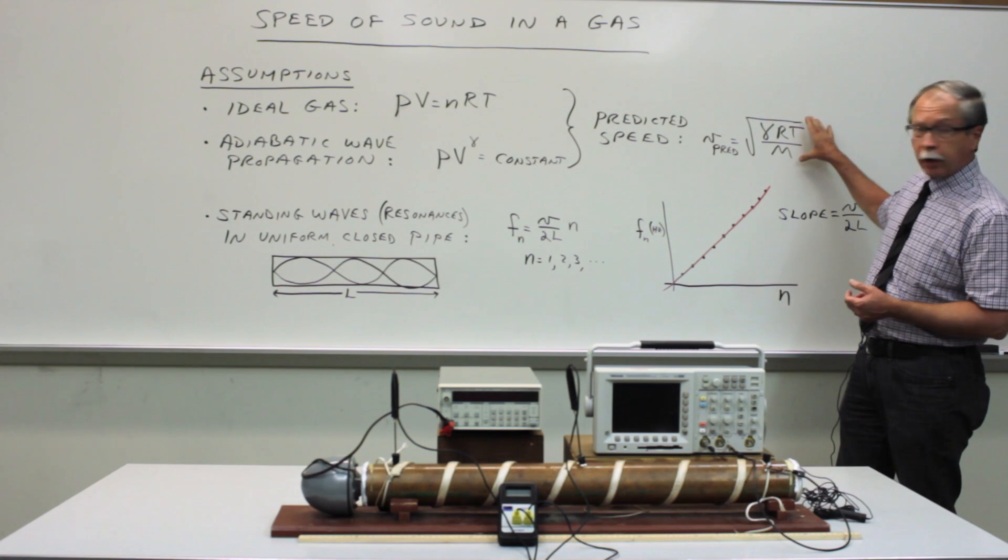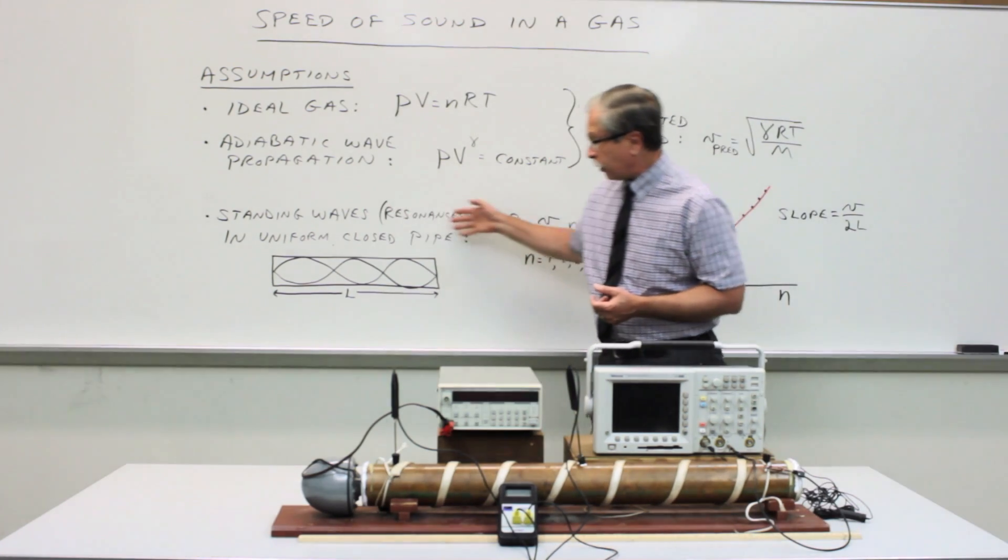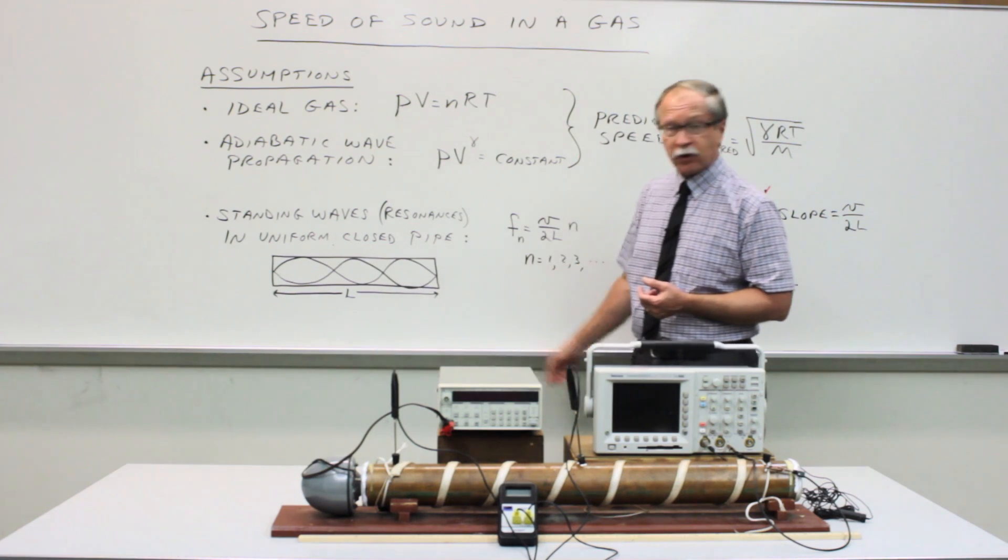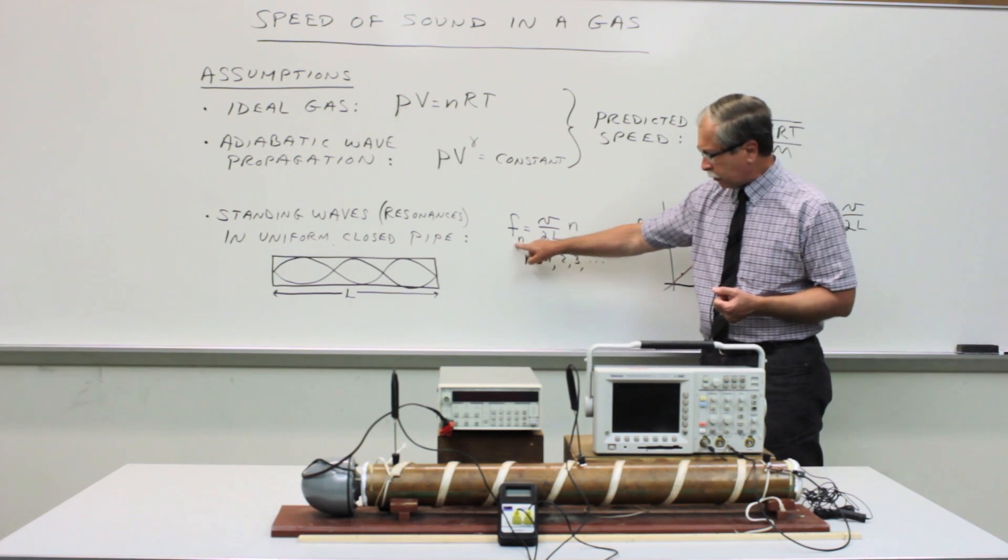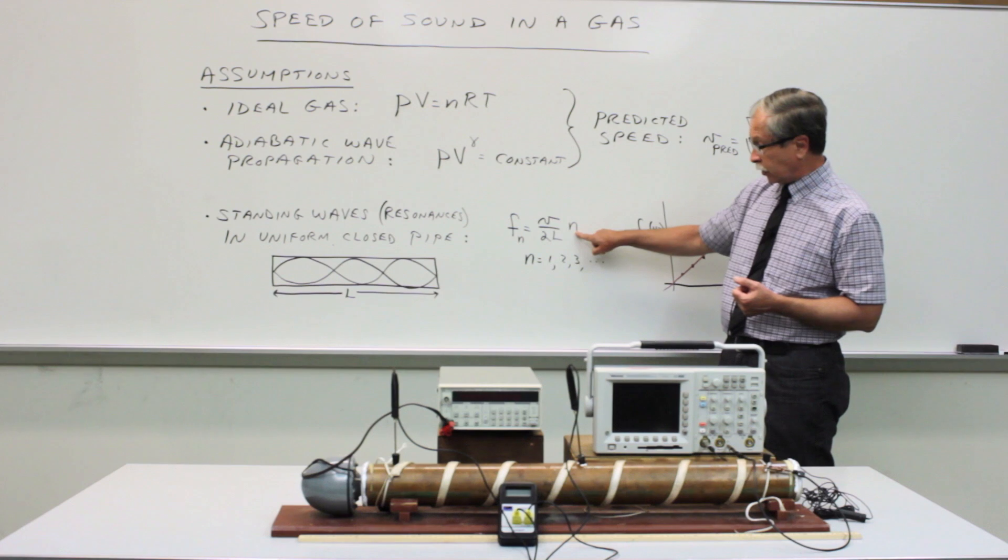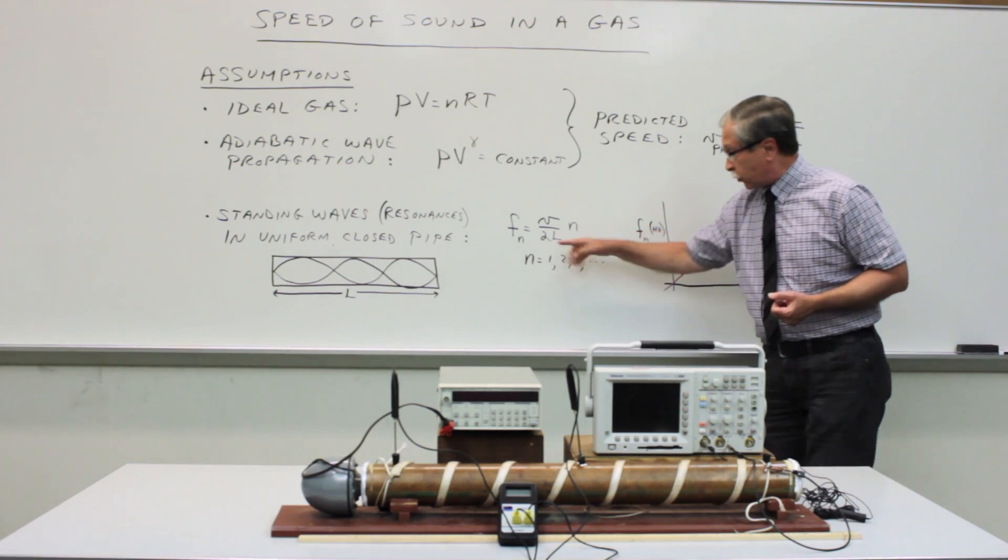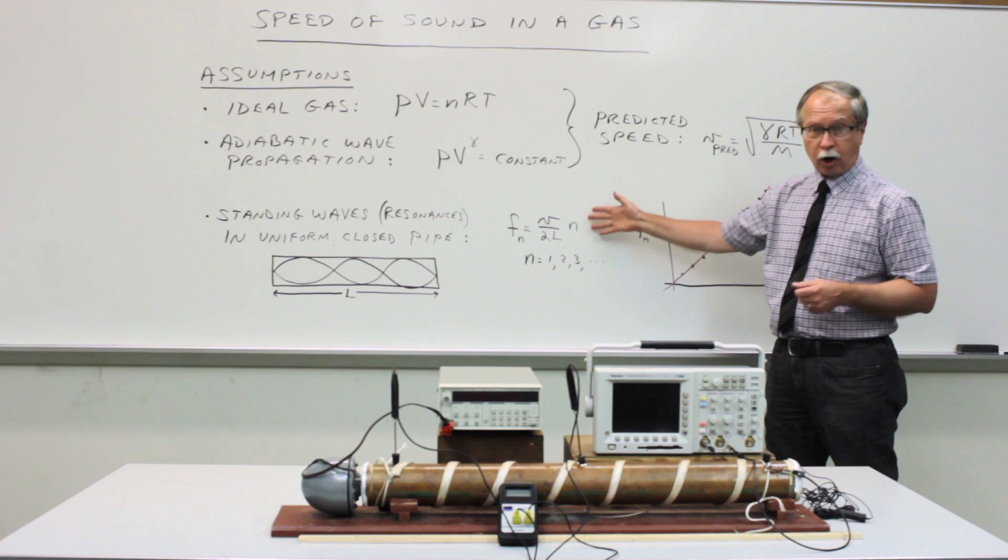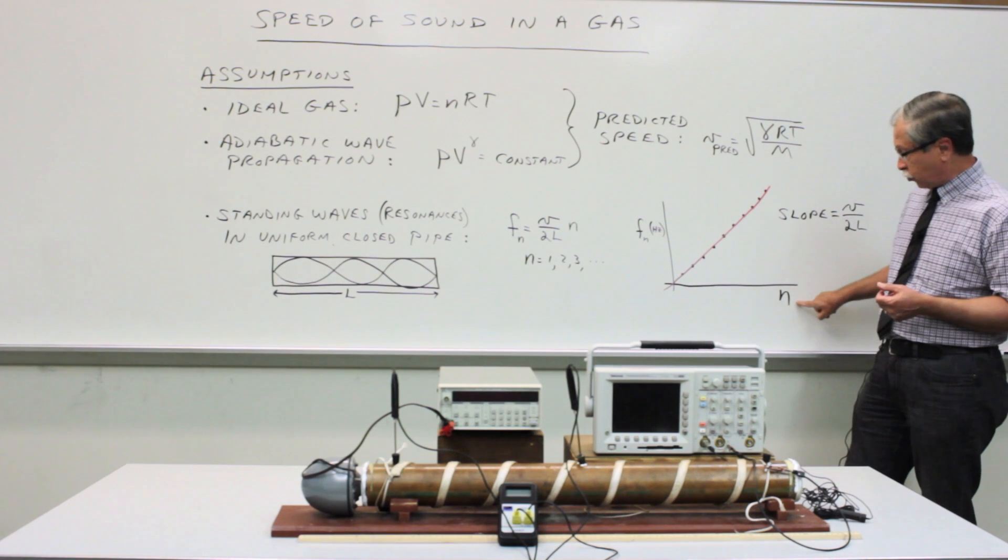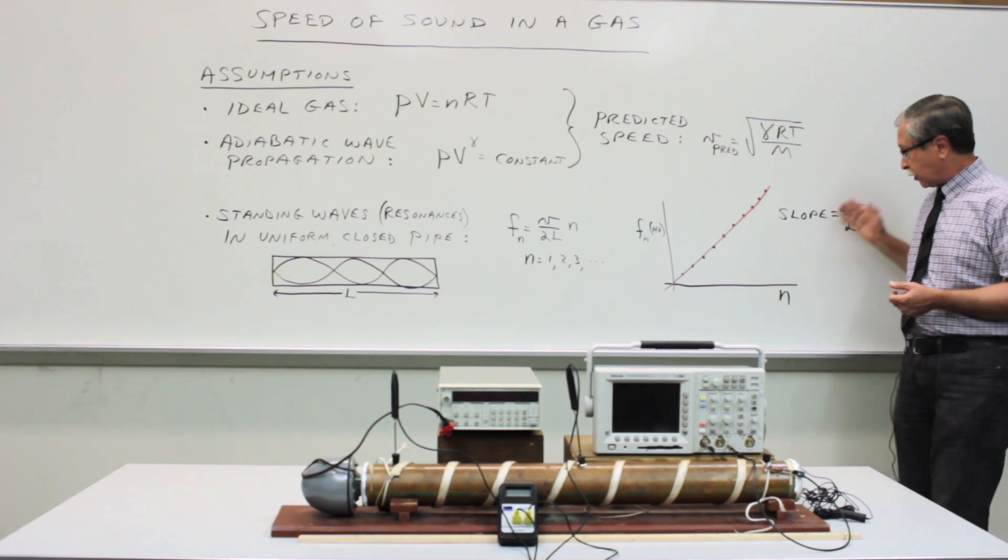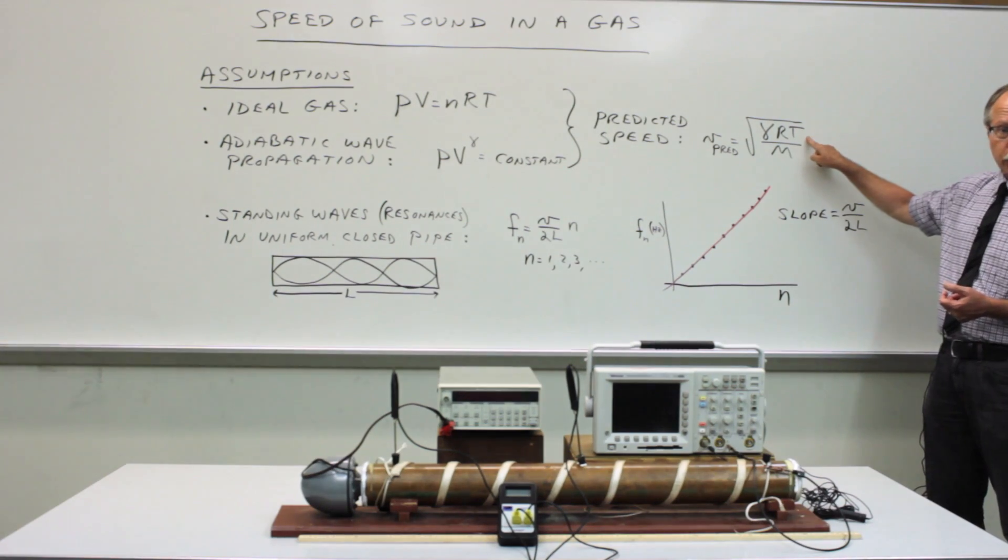So what we'll do is to compare this theoretical prediction to a measurement of the speed of sound, which we derive by assuming that we get a series of resonances in a closed uniform pipe, which form a harmonic series. So the frequency of the nth resonance is simply an integer multiple, n times the fundamental frequency, which is the speed over twice the length of the pipe. So if we measure as many of these resonances or harmonics as you possibly can find and plot the frequency of the resonance as a function of the harmonic number, the slope of that plot is related to the speed of sound. So we compare the experimentally determined speed to the theoretically predicted speed.